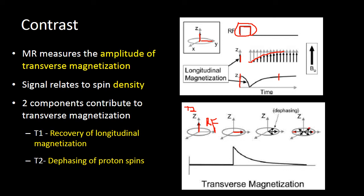The protons cancel each other out so that there is no longer any measurable transverse magnetization — not because all of the protons have realigned with the Z-axis, but because they are out of phase with one another. The transverse magnetization right at the RF pulse is maximized, and then you lose that transverse magnetization as there is realignment with the Z-axis, which takes quite a bit of time. There is also loss of transverse magnetization due to dephasing, and that dephasing tends to occur very rapidly.